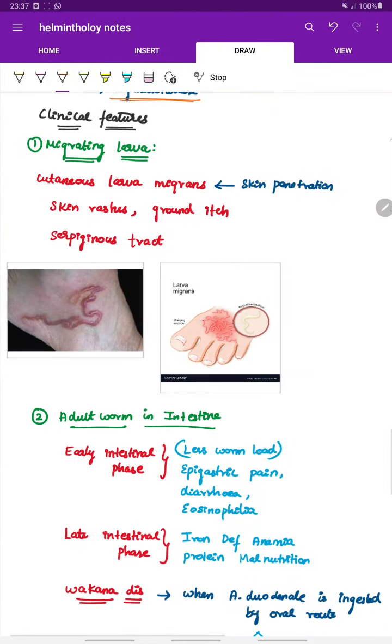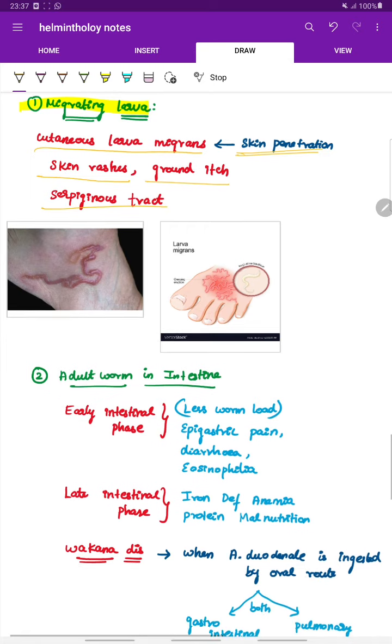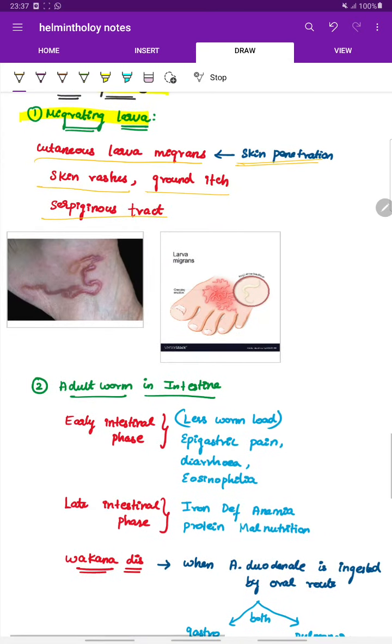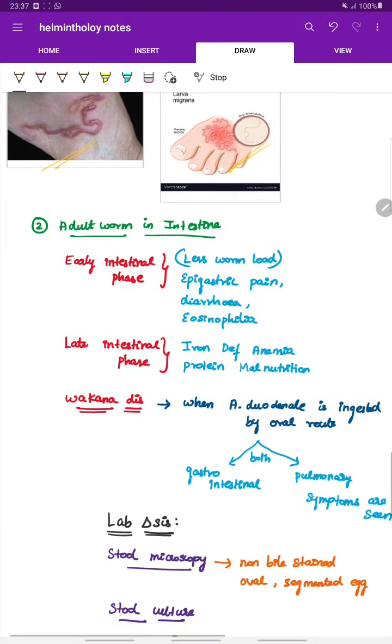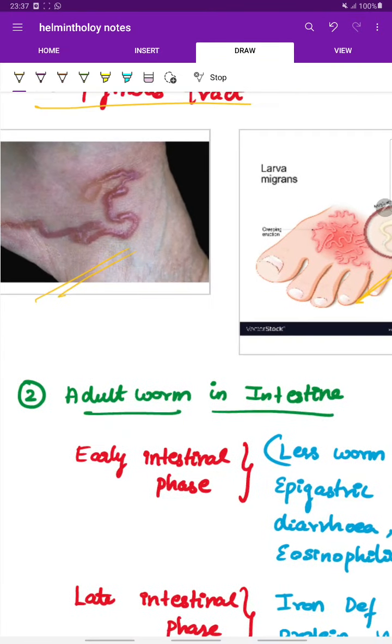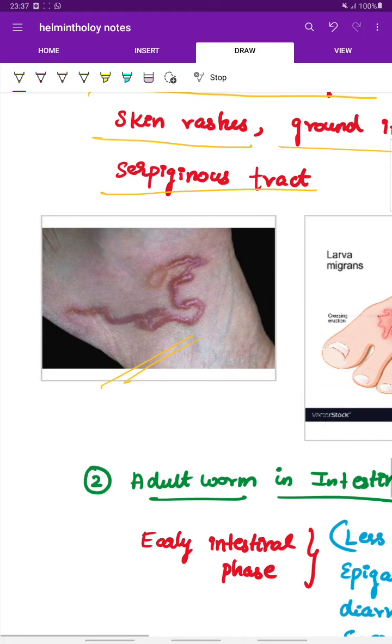Clinical features: first features due to migrating larva. The migrating larva produces cutaneous larva migrans due to skin penetration at the site of infiltration. Also it causes skin rashes, ground itch, and serpiginous tract.